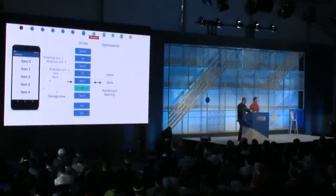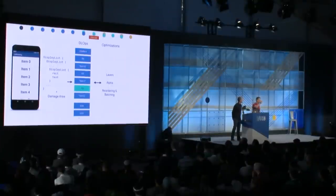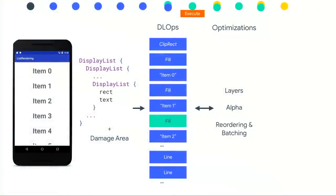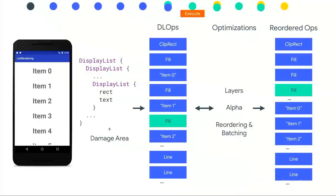Another optimization is reordering and batching. We look at all operations — because we have list items, we interleave many similar operations: draw a rectangle, draw text, draw a rectangle, draw text again. Instead of changing GPU state several times, if commands don't overlap, we can draw all the rectangles together and then all the text together. We can even merge: a bunch of text using the same color and font doesn't need separate draw calls — just a single one. So the original DL ops had interleaved fills and text ops, and after reordering they become a series of fills followed by a series of text operations, even batched together for greater efficiency.